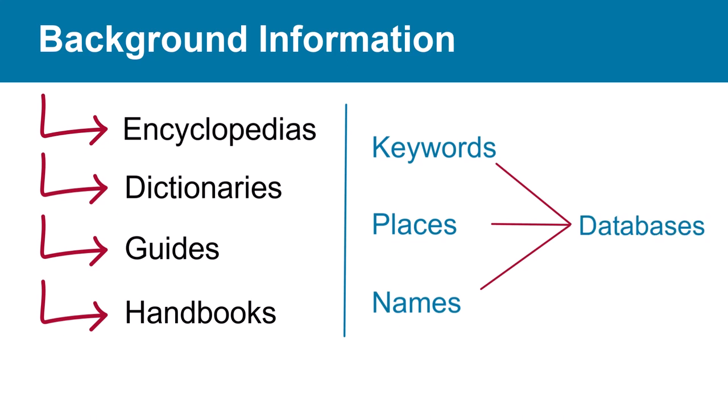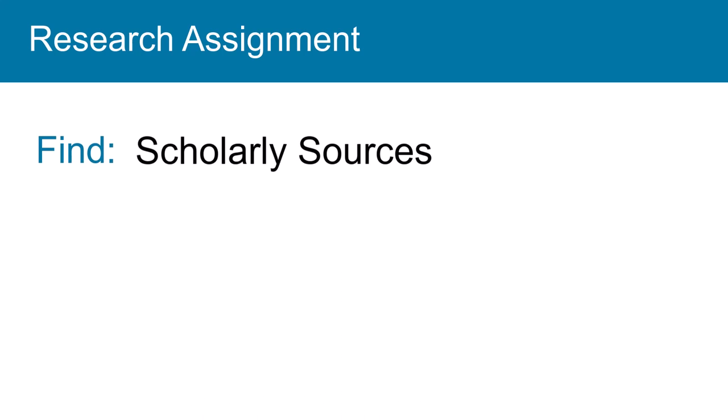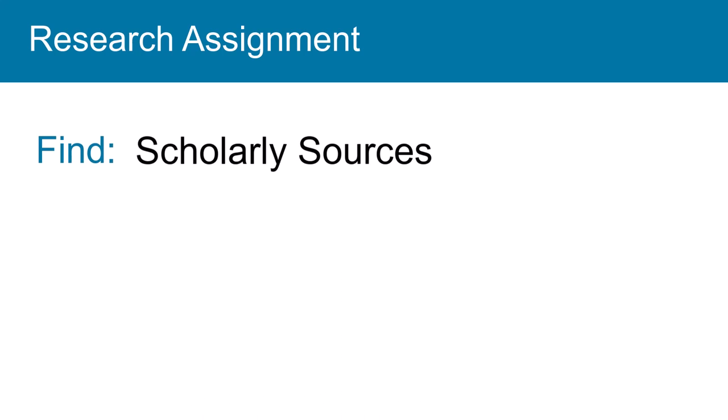Let's do an example and search for some background information. Your professor assigns you a research paper, and you can only use scholarly sources to support your argument. You decide to focus your research on whether video games increase violent behavior in children. So where do you start looking?